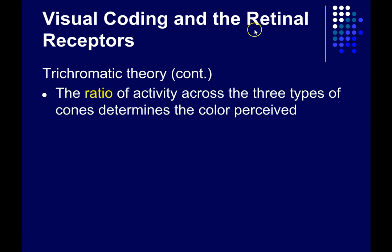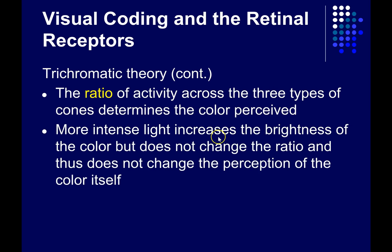The trichromatic theory says that it's really the ratio of activity, the relative activity, across these three cone types that determines the color that we perceive. A more intense or brighter light would increase the brightness of the color, but it wouldn't change the ratio of activity across the three cone types. And as a result, it wouldn't change the perception of the color itself, just its intensity or brightness.